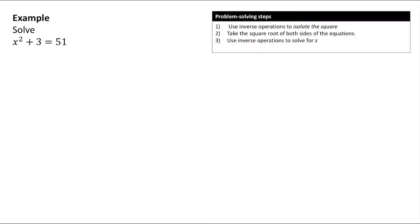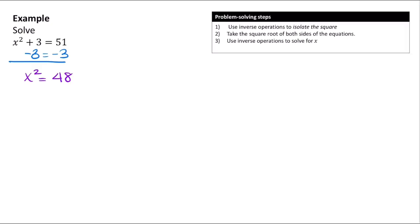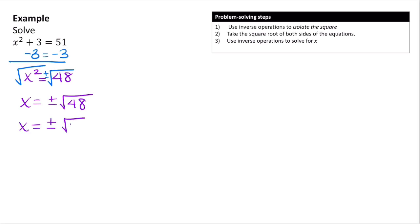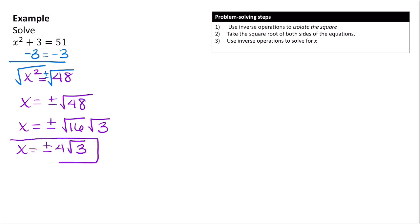Let's try solving x squared plus 3 equals 51. The square term is not isolated because it has the plus 3 with it, so we start by subtracting 3 from both sides. That gives us x squared equals 48. Now we take the square root of both sides, remembering to add the plus or minus, giving x equals plus or minus the square root of 48. Since 48 is divisible by 16, a perfect square, we simplify: x equals plus or minus the square root of 16 times the square root of 3, which is x equals plus or minus 4 times the square root of 3.